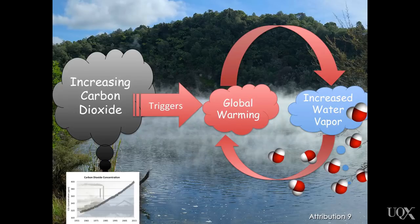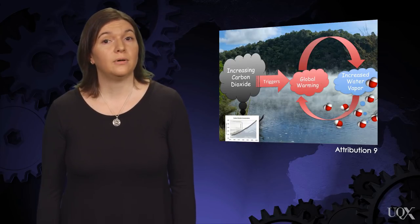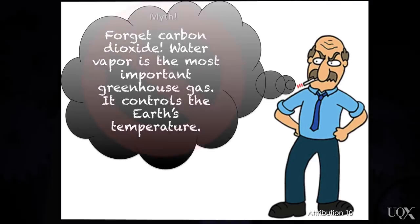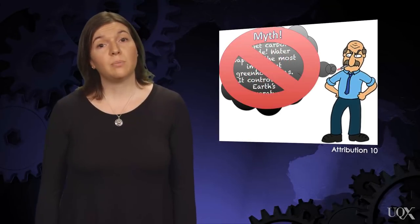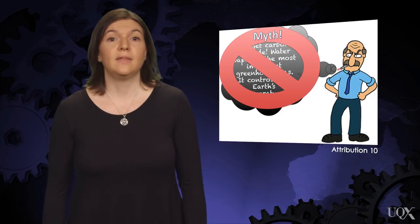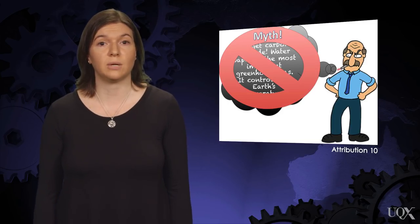If carbon dioxide warms the atmosphere one degree Celsius, then water vapor can cause the temperature to go up another one degree. But some climate myths take this science out of context. Let's look at an example. One myth related to water vapor claims, forget carbon dioxide, water vapor is the most important greenhouse gas. It controls the earth's temperature. This implies if water vapor is a strong greenhouse gas, and we have it in large concentrations in the atmosphere, then adding a small amount of the greenhouse gas carbon dioxide can't make a big difference in the global average temperatures.